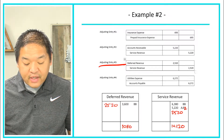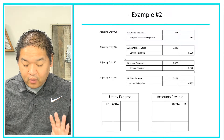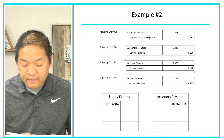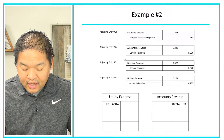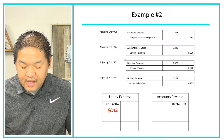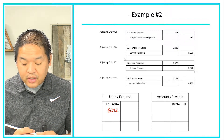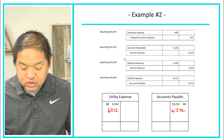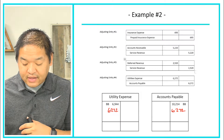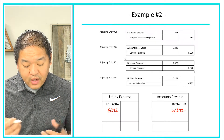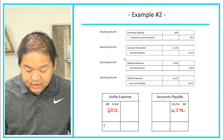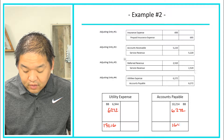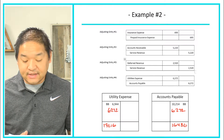Moving to the last one, AJE-4: we've got a debit to utilities expense on the left-hand side for $6,272, and accounts payable on the right-hand side is credited for that same amount — $6,272. Adding the numbers down, we get $13,216 for utilities expense and $16,486 for accounts payable on the right-hand side.